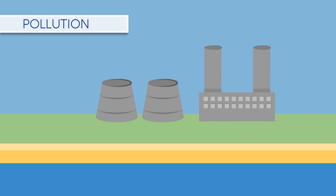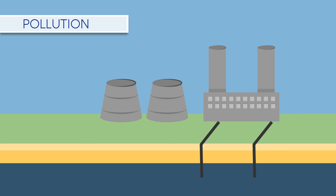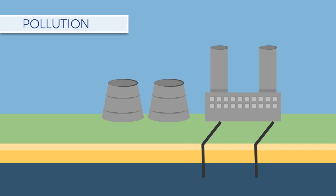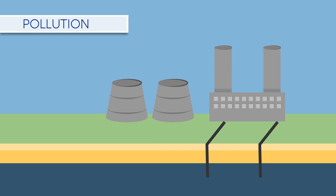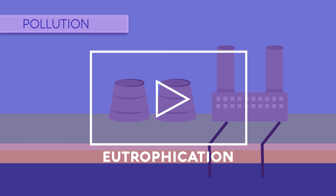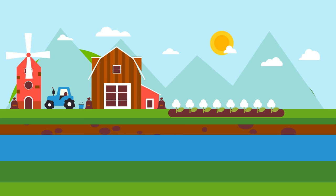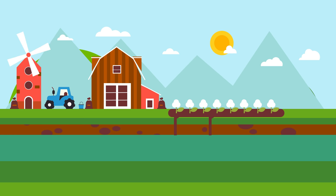Human activities are polluting the air and water. Toxic discharge into water from industrial processes has a negative effect on local aquatic species by killing, weakening, or affecting their ability to reproduce. Another big water pollution problem is eutrophication. Phosphorus and nitrogen in fertilisers run off agricultural fields and pass into rivers. These surplus nutrients cause algae to bloom, which then starves other aquatic species of oxygen and light, causing them to die.